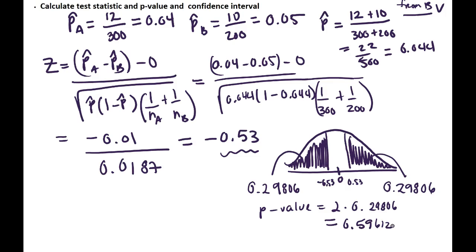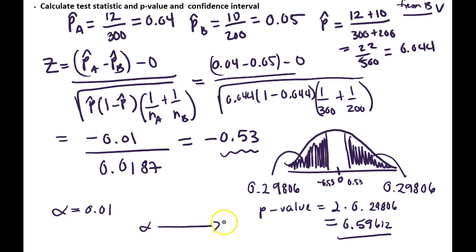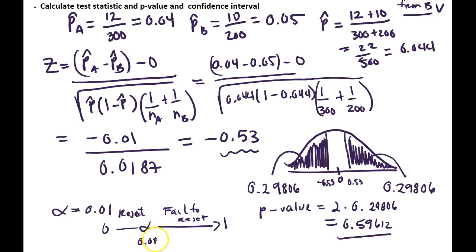That's a really large p-value, so this result is not going to be significant. Our alpha is equal to 0.01, and our p-value is far greater than that. On a scale from 0 to 1, our significance level of 0.01 defines the rejection region — anything below that we would reject. But our p-value of 0.59612 is far greater than 0.01, so we are going to fail to reject the null hypothesis.